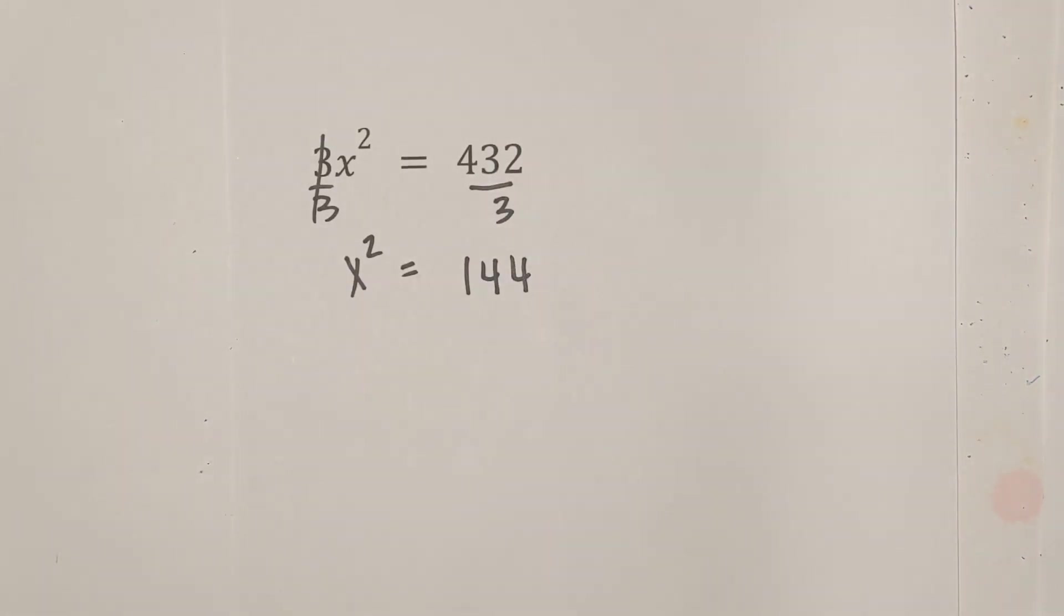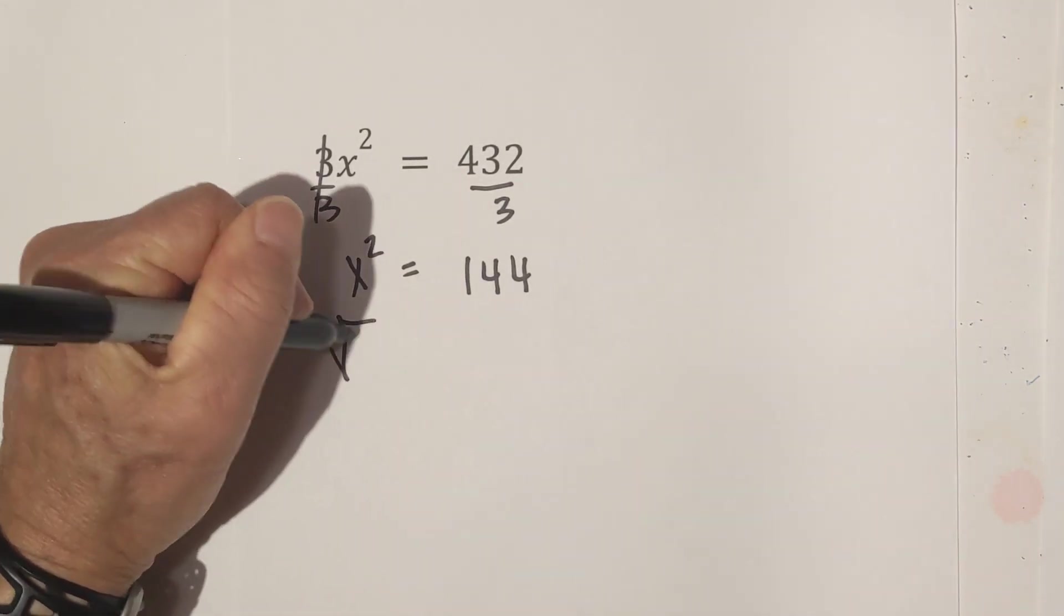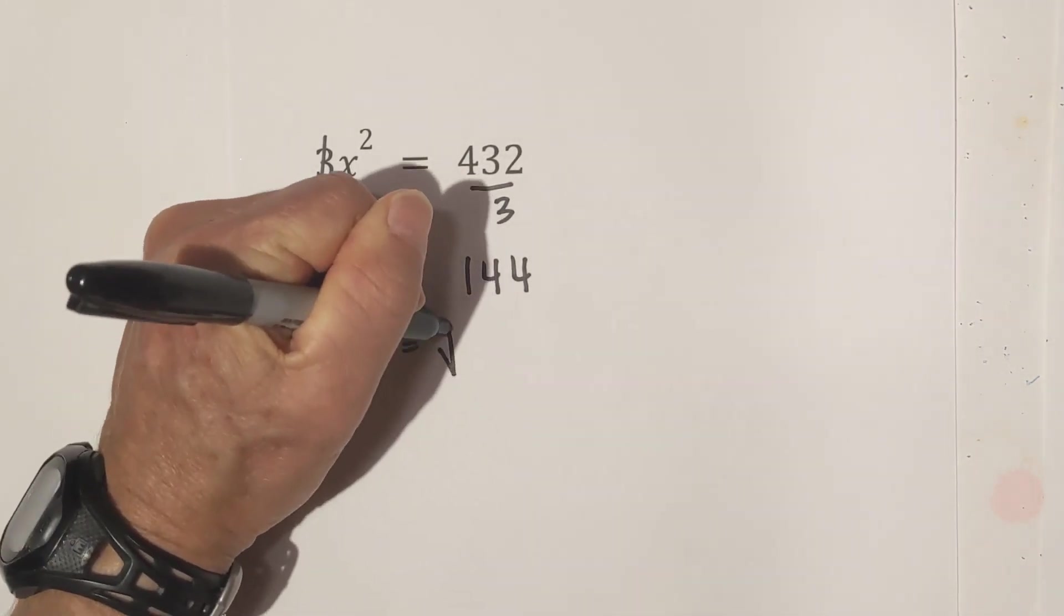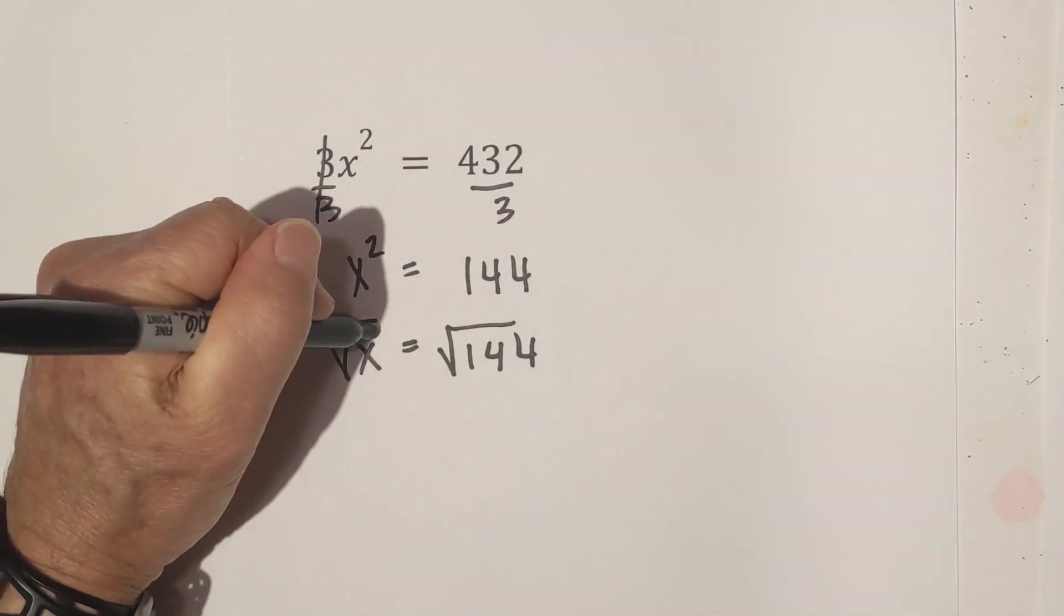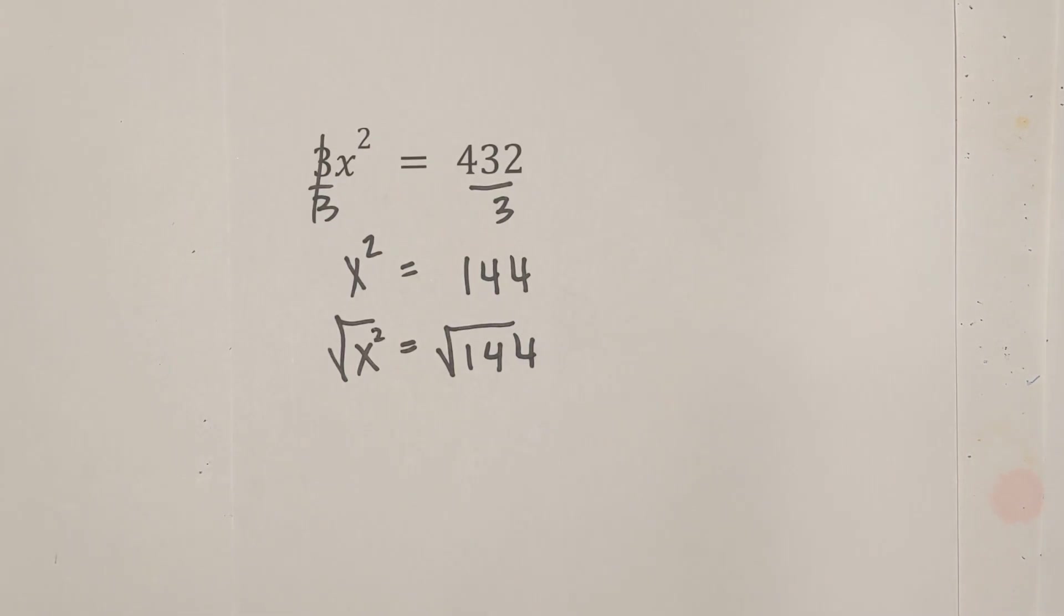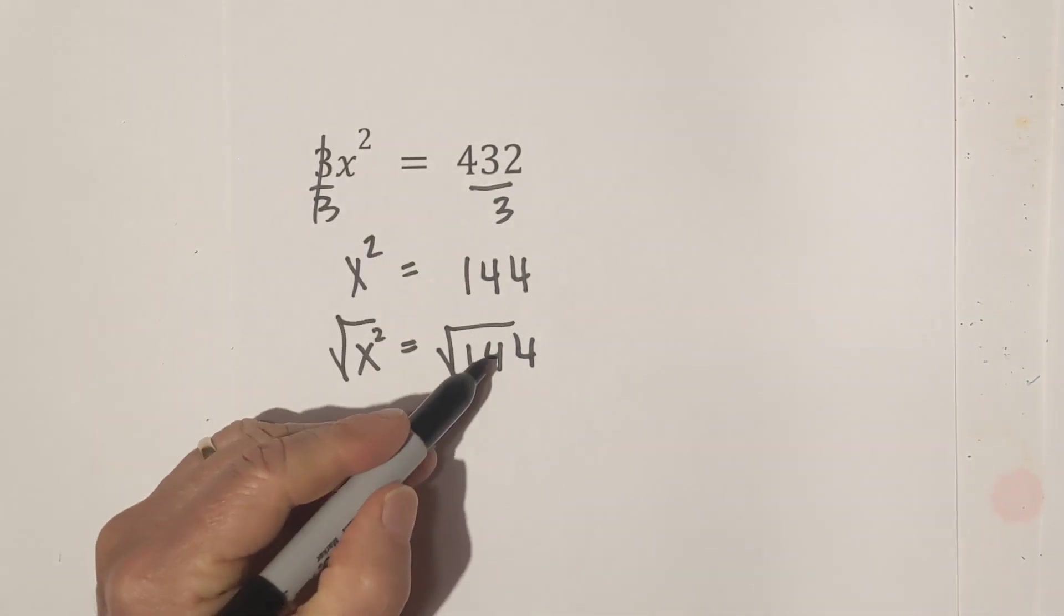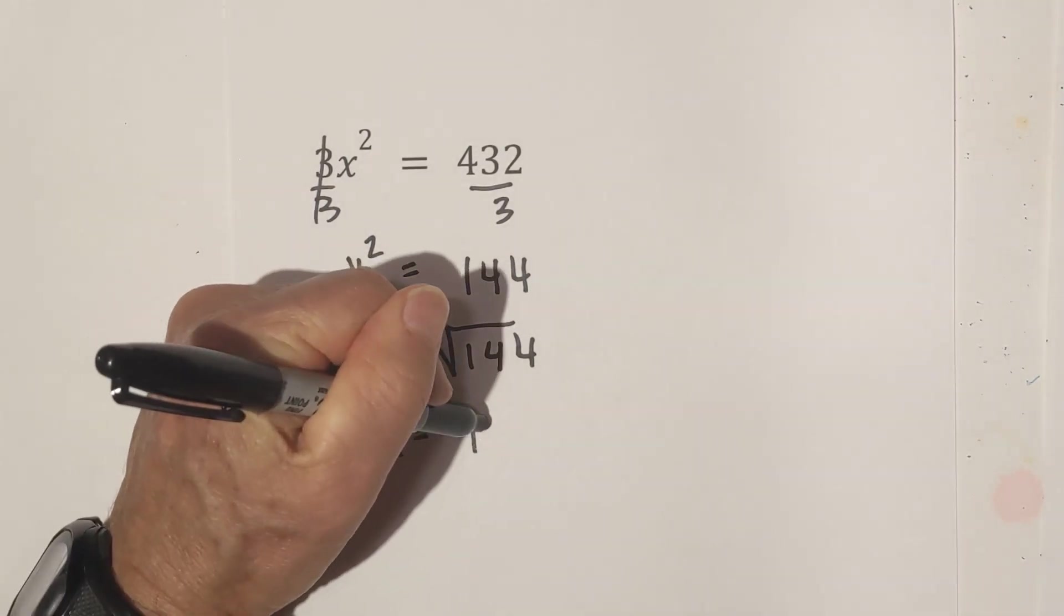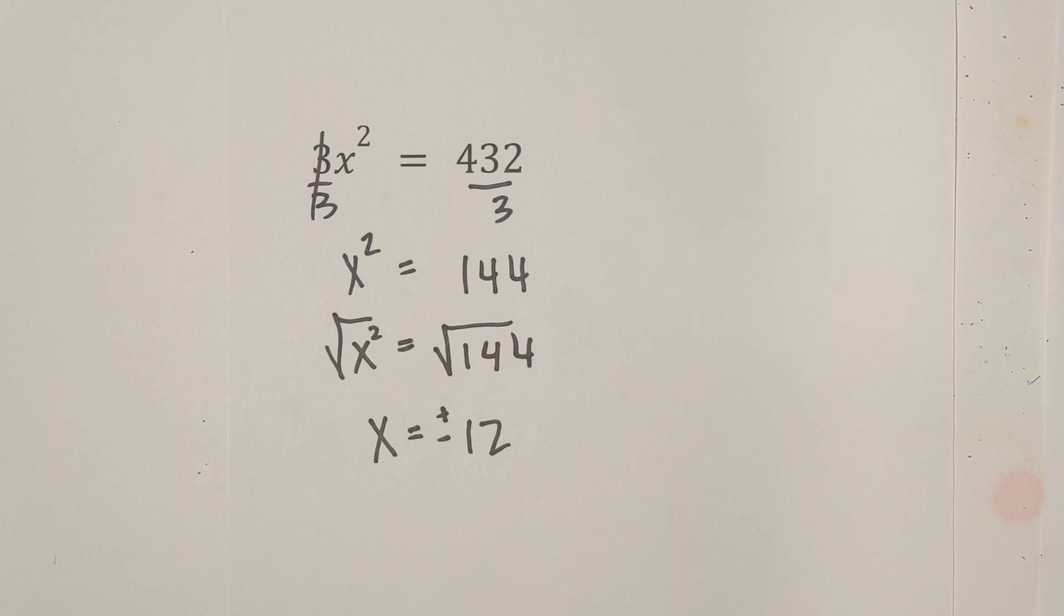Now what we do is we need to get rid of the square by taking the square root. And that square root of x squared. And that becomes x equals. And the square root of 144 is 12. And remember, it's plus or minus. I thought that one was pretty straightforward. One final example.